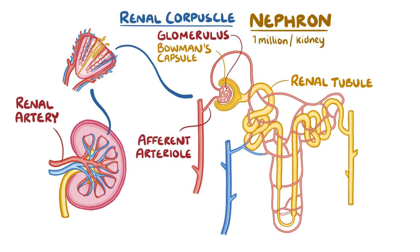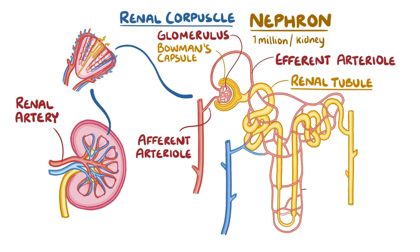Interestingly, once blood leaves the glomerulus, it doesn't enter venules. Instead, the glomerulus funnels blood into efferent arterioles, which divide into capillaries a second time. These capillaries are called peritubular capillaries because they are arranged around the renal tubule.